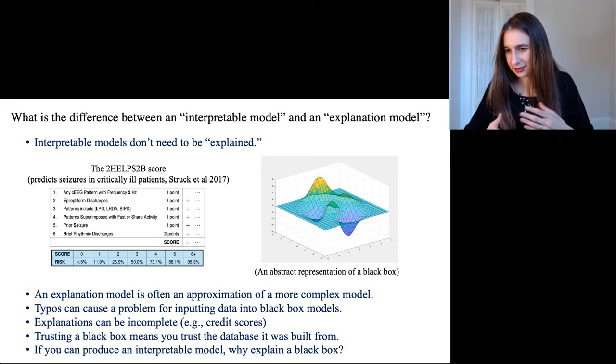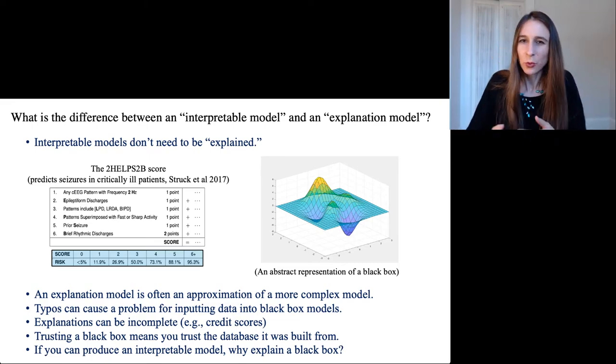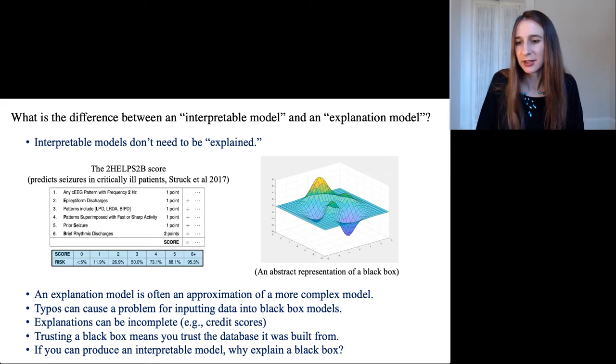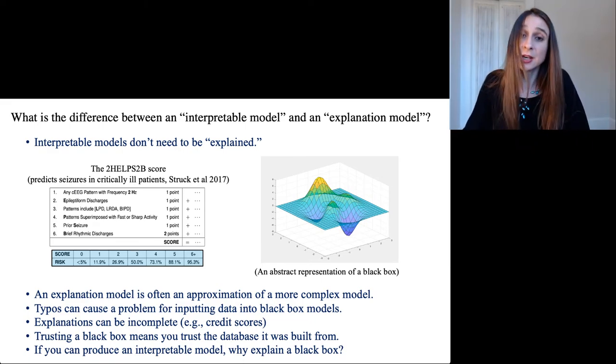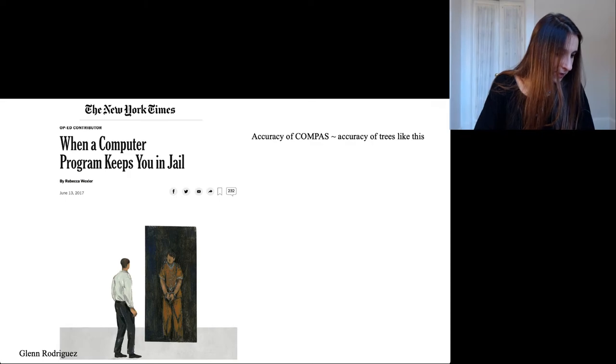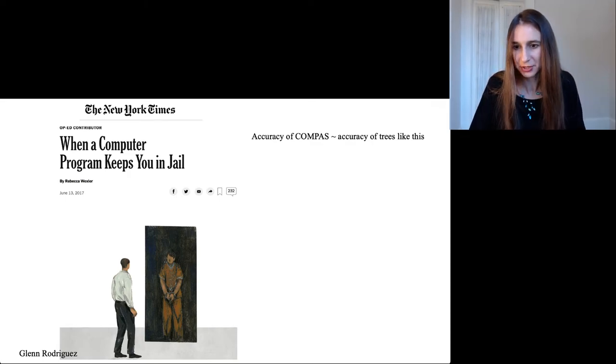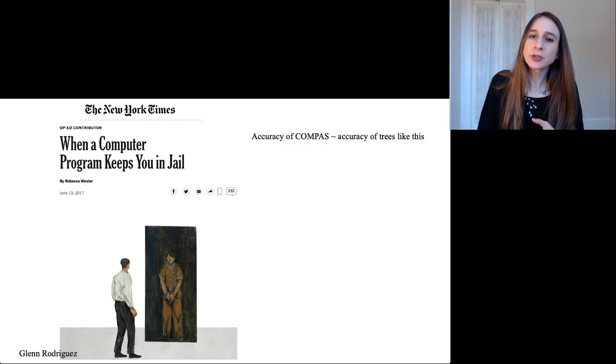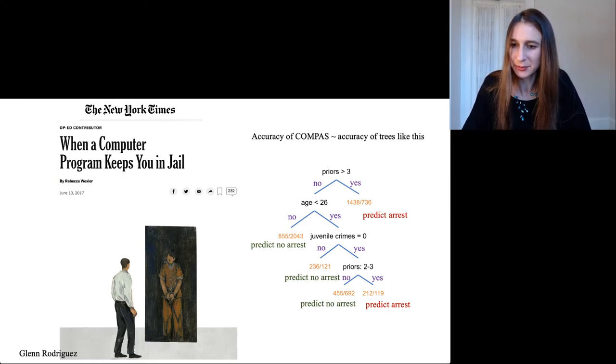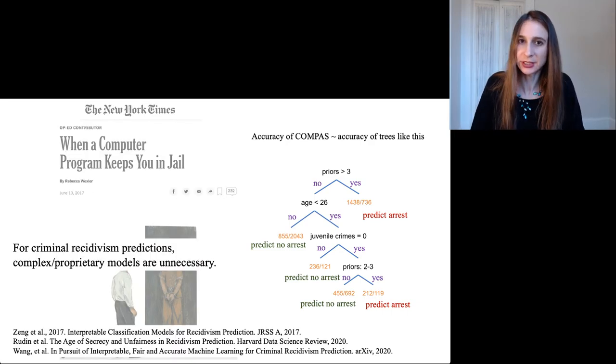As I keep saying, if you can produce an interpretable model, why should you try to explain a black box? That doesn't really make much sense. I know that in every possible situation I've come across, an interpretable model can be constructed that's of the same accuracy as an equivalent black box, even for problems like computer vision prediction. In cases like recidivism prediction where we're using proprietary models or black box models, as it turns out, those models happen to be just as accurate as very simple decision trees or linear models, and there's not really any clear reason why we're using complex models for these cases. This has been fairly well studied in criminal recidivism prediction.